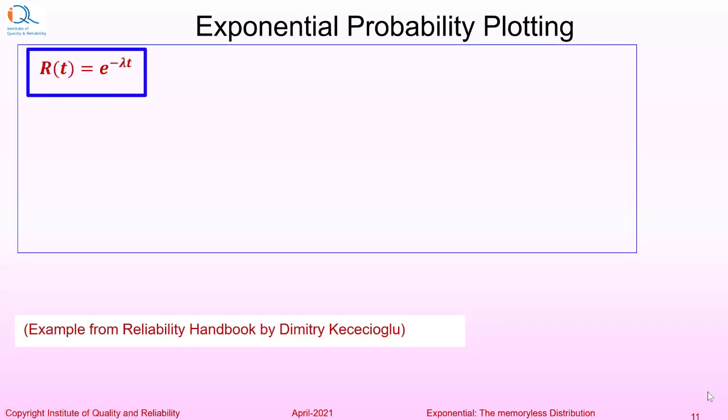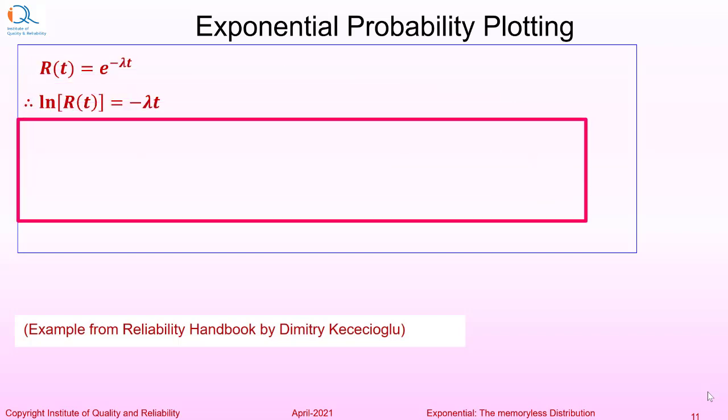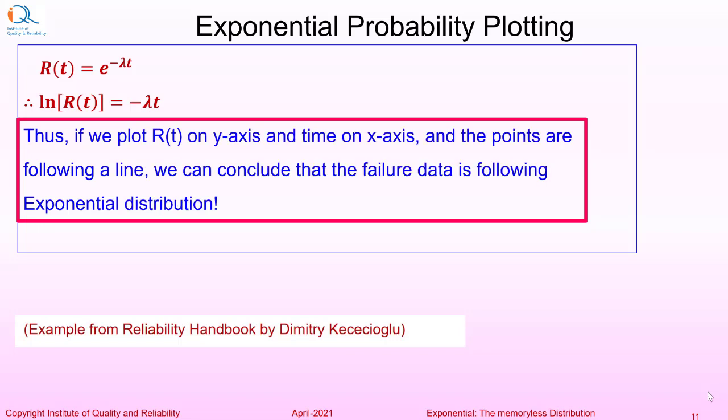As we know, reliability in case of exponential distribution is given by e to the power minus lambda t. Suppose we take logarithm of both sides, then ln of R(t) would be equal to minus lambda t. Thus, if we plot R(t) on y-axis and time on x-axis and the points are following a line, we can conclude that the failure data is following exponential distribution.